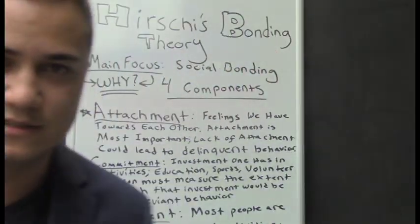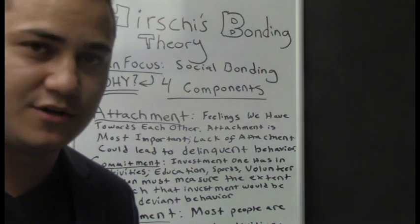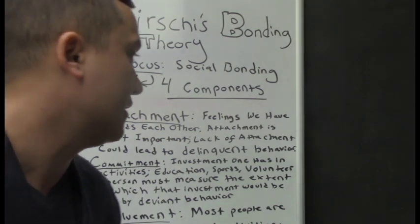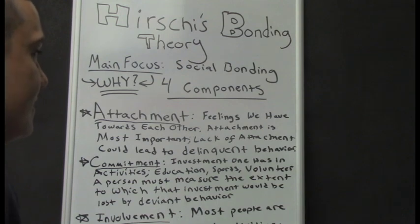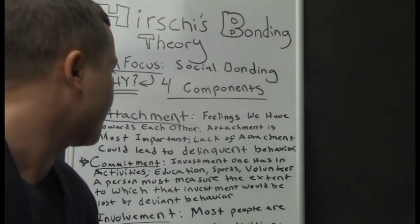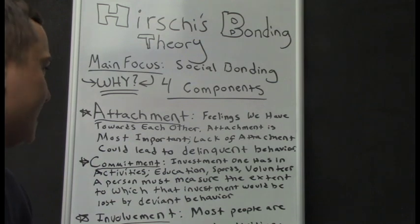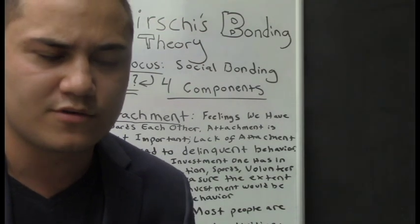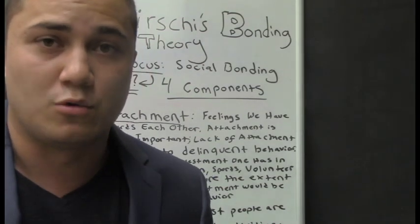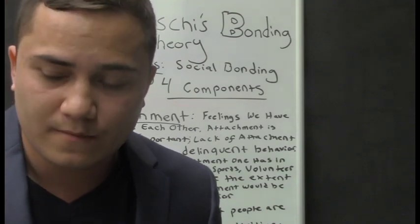My favorite one is attachment. In the book, attachment is the feelings we have towards each other. Attachment is most important — lack of attachment could lead to delinquent behavior. Attachment refers to the attachment we have to our parents, to our social peers, and perhaps to a role model. Lack of attachment to society is a reason for an individual to commit deviant behavior.